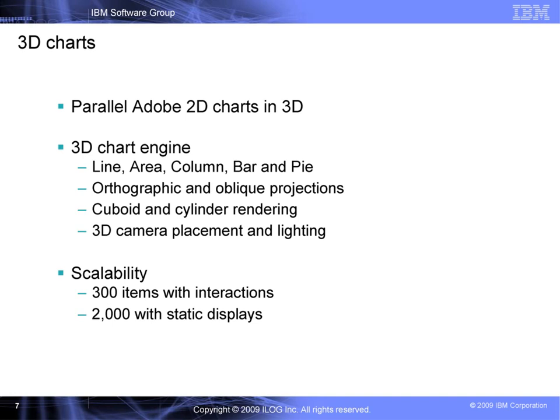We created a true 3D engine with camera placement and lighting. Since the engine is crafted only for 3D chart display, it provides small file size and high performance. Concerning scalability, for displays where the end user will manipulate the chart to make it rotate, you can typically handle up to 300 data points. If the end user will look at static charts, you can easily scale up to a few thousand data points. Note that for larger data sets, you would have to subsample before passing them to our 3D chart engine.